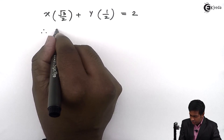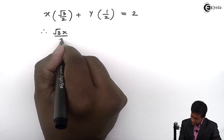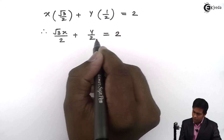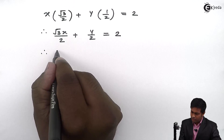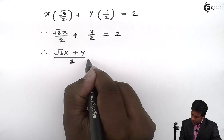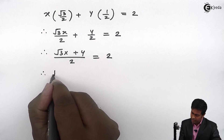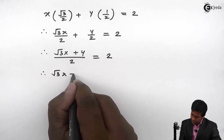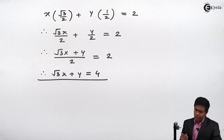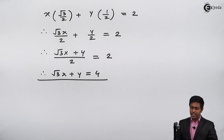Therefore, we get (√3·x)/2 + y/2 = 2. Taking the denominator common: (√3·x + y)/2 = 2. Multiplying both sides by 2, we get √3·x + y = 4. This is the equation of the required line.